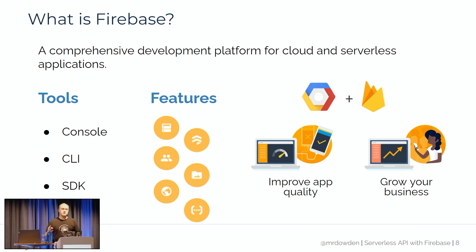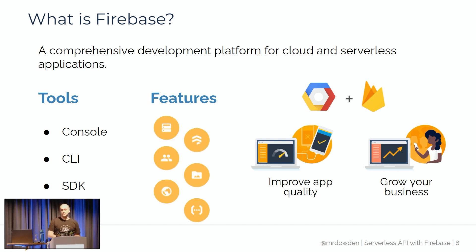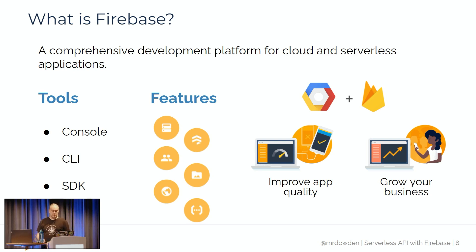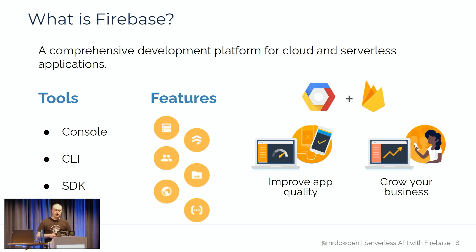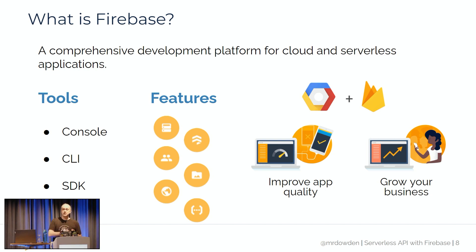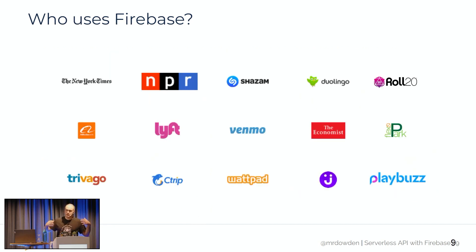Some of the features available include two different databases: the real-time database, which is a JSON data store, and Cloud Firestore, which is a document database with collections and documents. There's also hosting for static files, a storage bucket for user-uploaded assets, and authentication that includes email/password, passwordless, and many OpenID and OAuth integrations that are basically just a click away. Additional features include Firebase Cloud Messaging for push notifications, Crashlytics, performance monitoring, and full integration with Google Analytics across web, Android, and iOS applications in one dashboard.